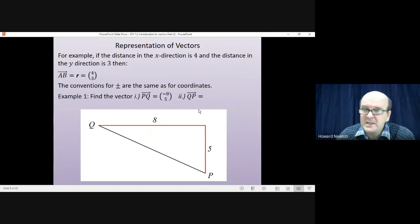The vector from Q to P, exactly the same, but the complete opposite. So now we'll have gone to the right 8, so that'll be plus 8, and we'll have gone down 5, so that'll be minus 5.